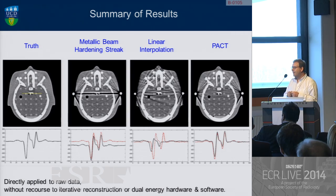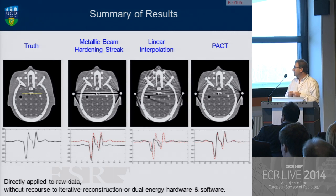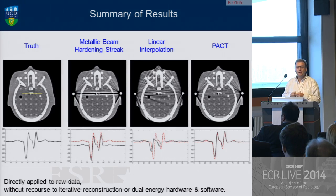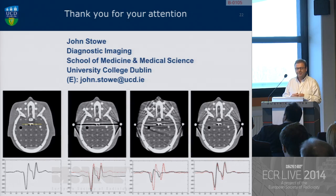This is a throwback technique because spectral CT is on the horizon. We have a prediction of five to ten years before we'll have multi-bin detectors. So maybe this is a little bit too little too late, but it's something that I wanted to work on from a long time ago. Thank you very much.